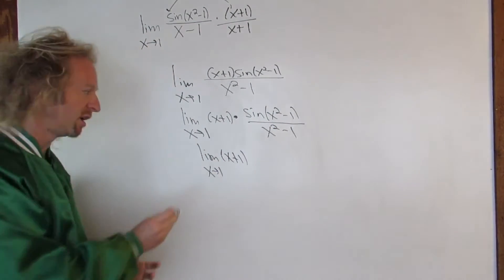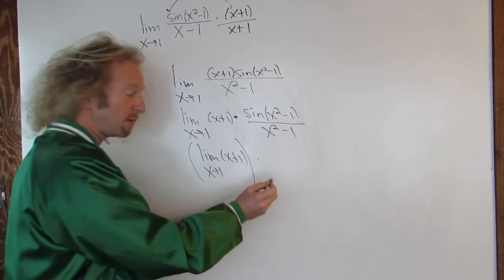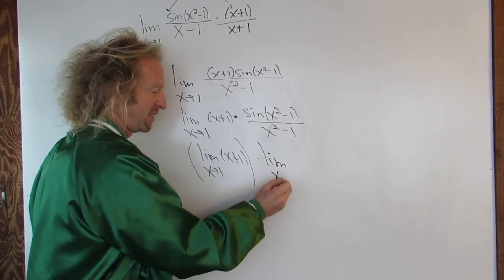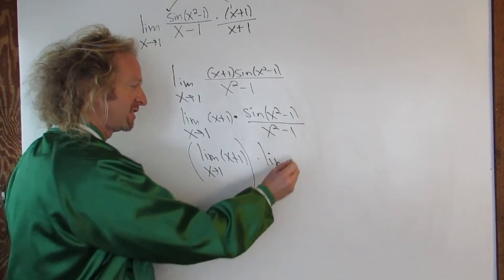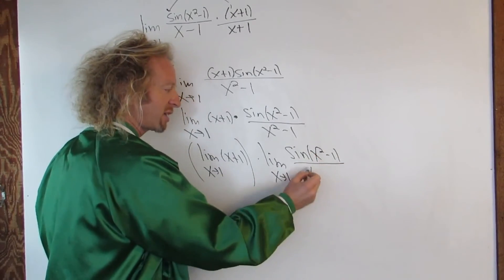This is the limit of x plus 1. Let's be super pro. Put parentheses. Times. And this is the limit. And then you have this here. So this is sine of x squared minus 1 over x squared minus 1.